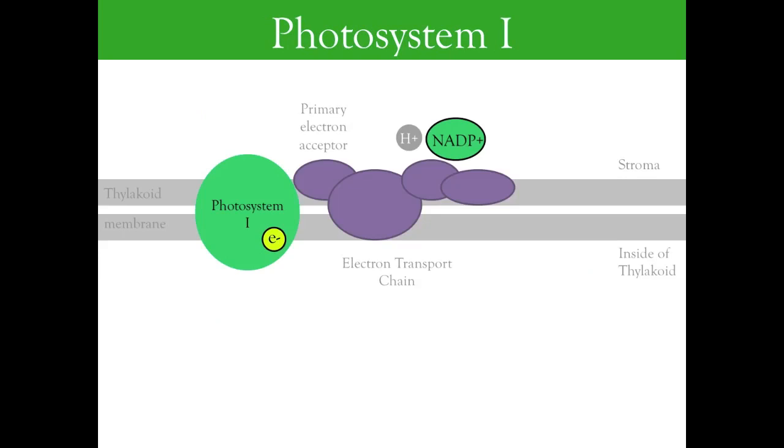As light strikes photosystem 1, another electron is excited and sent into another electron transport chain. This electron is replaced by one arriving from photosystem 2.